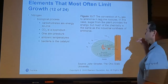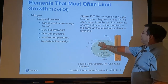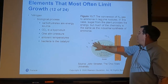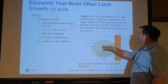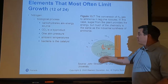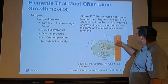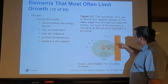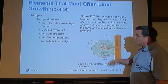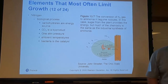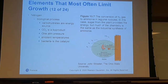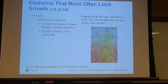A diagram shows how N₂ gas is taken in by rhizobia, which form nodules on legume roots. The rhizobia convert that N₂ into ammonia; in return, the bacteria receive sugar from the plant — a true symbiotic relationship.